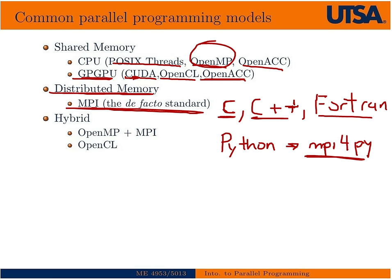MPI also works in shared memory machines for CPUs. So if you have multi-core processors, we can use MPI to take advantage of them as if they were distributed, though we may not get the full advantages we would from using something like OpenMP. This is where hybrid parallelization comes in — using MPI to distribute across the network and OpenMP locally to take full advantage of multi-threading on multi-core machines. OpenCL and OpenACC are newer standards evolving to work in these heterogeneous systems with distributed memory and multi-core locally.